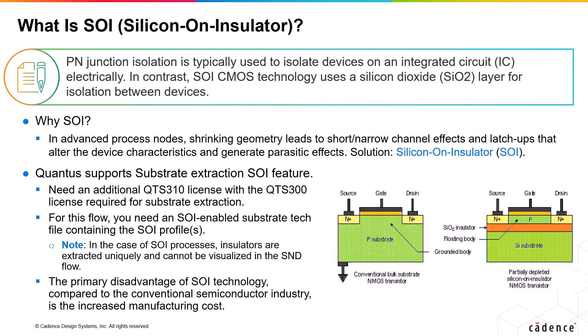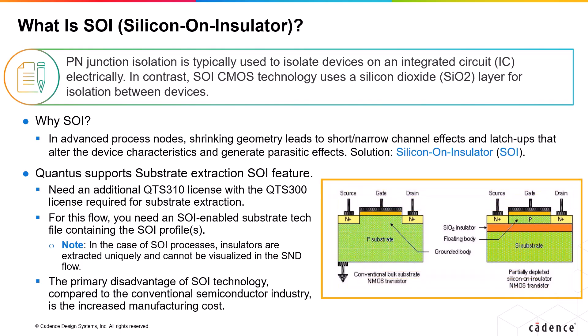In advanced process nodes, shrinking geometry leads to short and narrow channel effects and latch-ups that alter the device characteristics and generate parasitic effects. One solution is SOI, which stands for silicon-on-insulator.